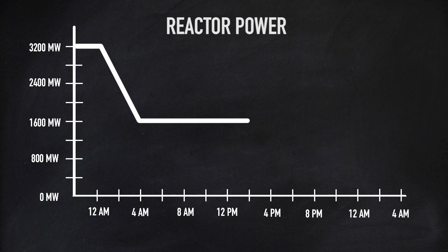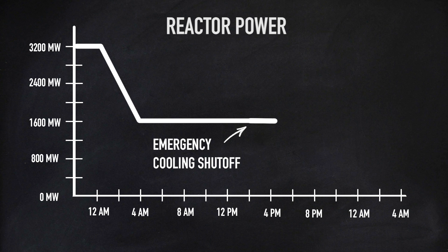At around 2 o'clock PM, the emergency core cooling system is switched off. By this time, the nuclear reactor is running at about 50% power. Under normal procedures for the test, the reactor would have been reduced to around 30%. However, Soviet authorities paused the shutdown procedure because there is a demand for additional power on the power grid. Instead of shutting down, the reactor is held at 50% for another 9 hours.